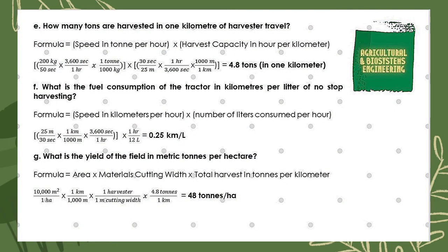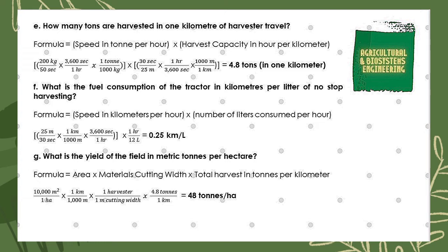Next, we solve for the number of tons harvested in one kilometer of harvester travel. We convert speed to tons per hour using: 3600 s = 1 hr and 1 ton = 1000 kg; and harvest capacity to hours per kilometer using 1 hr = 3600 s and 1000 m = 1 km. We have: (200 kg / 50 s) × (3600 s / 1 hr) × (1 ton / 1000 kg) × (30 s / 25 m) × (1 hr / 3600 s) × (1000 m / 1 km), giving a final answer of 4.8 tons per kilometer.